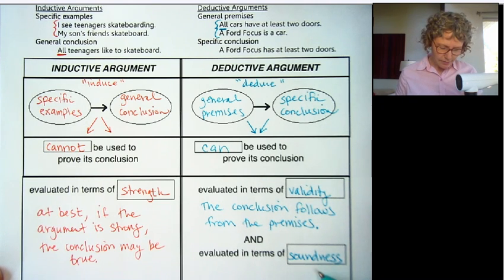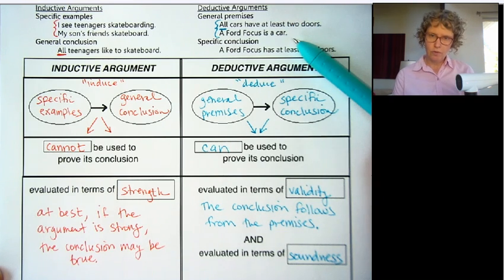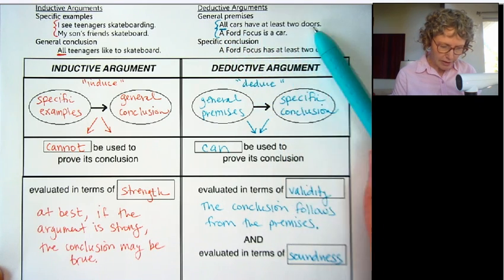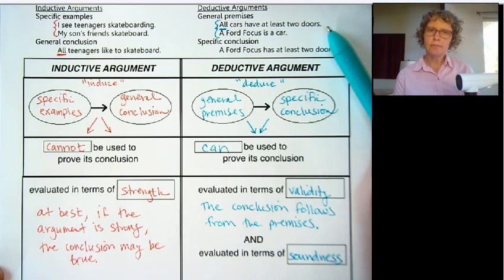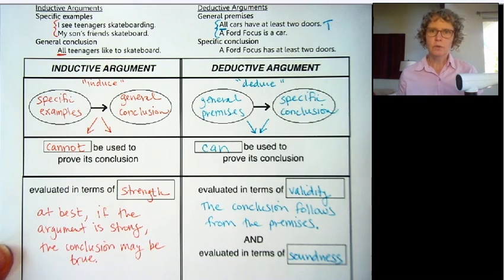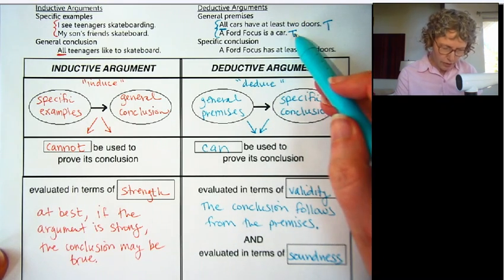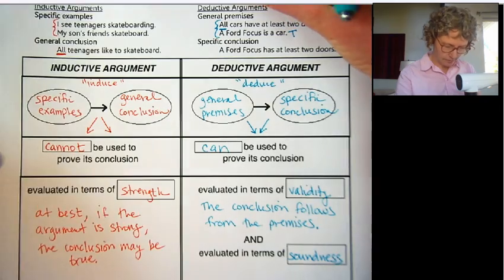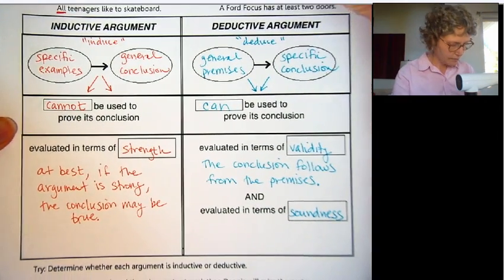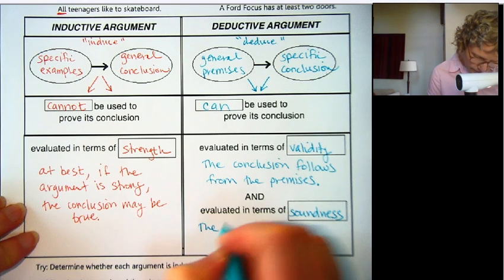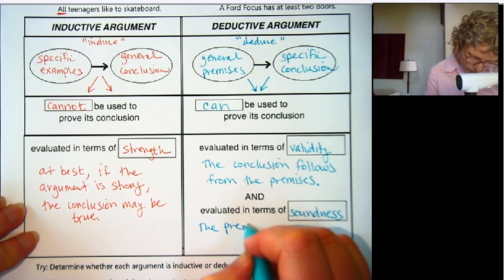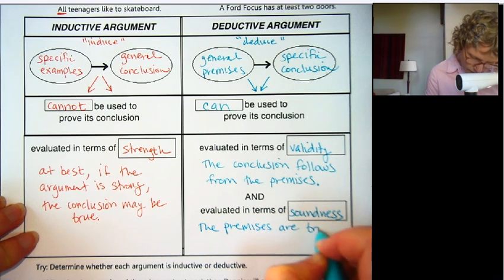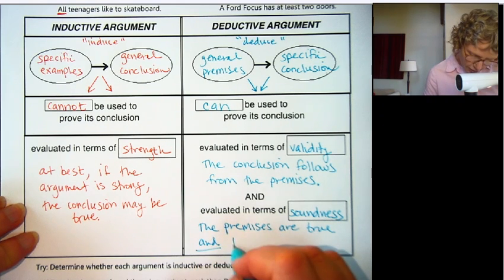For soundness, we're looking at whether the premises are true. All cars have at least two doors — is that true? I think so. A Ford Focus is a car — that's true. So if the premises are true and the conclusion follows from the premises, it is a sound argument. The premises must be true in order to be sound, and the argument must be valid.